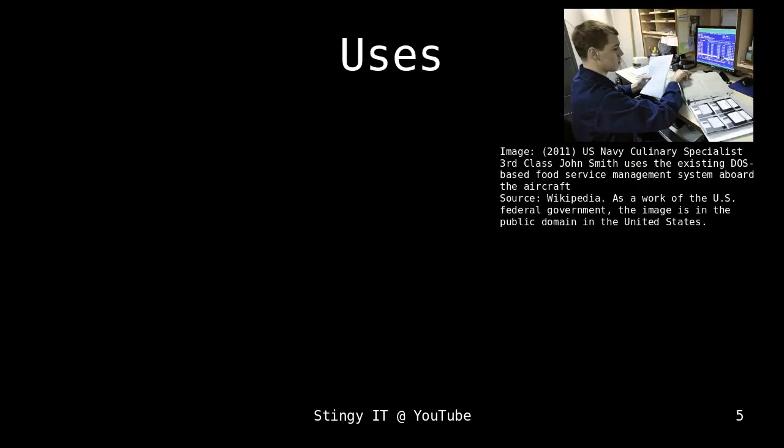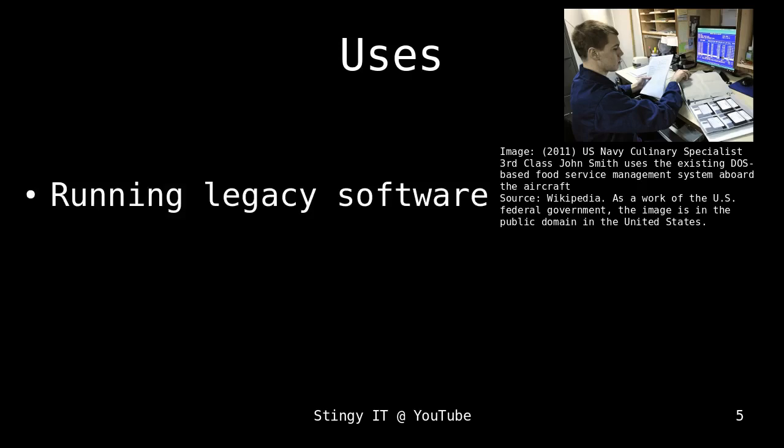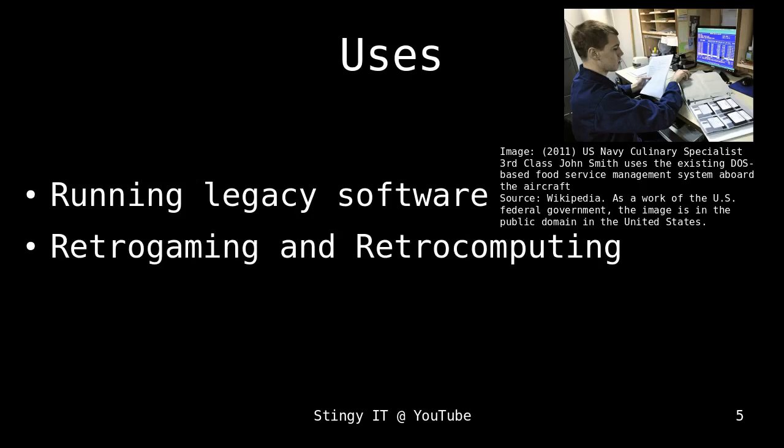In this picture, you can see a US Navy person using a computer running MS-DOS to manage a food service management system. I got this photo from Wikipedia — it's from the US Navy, taken in 2011. As you can see, the US Navy is one of those environments that still occasionally uses MS-DOS to run legacy software, because it still works. So why replace it? That's our first purpose for using DOS nowadays: running legacy software. The other purpose is retro gaming and retro computing.